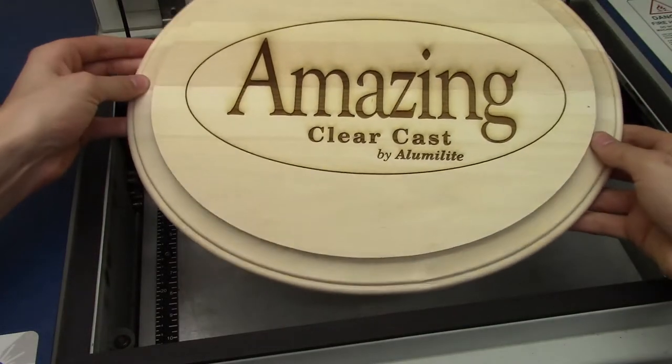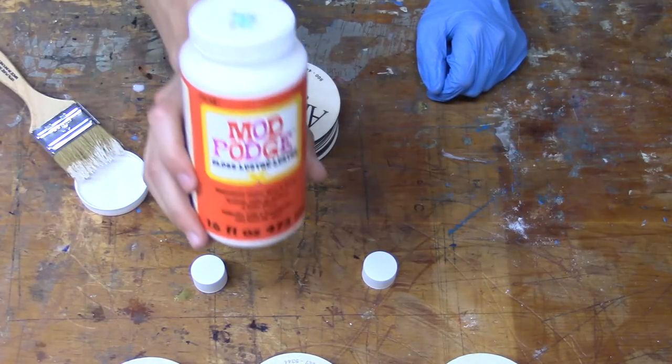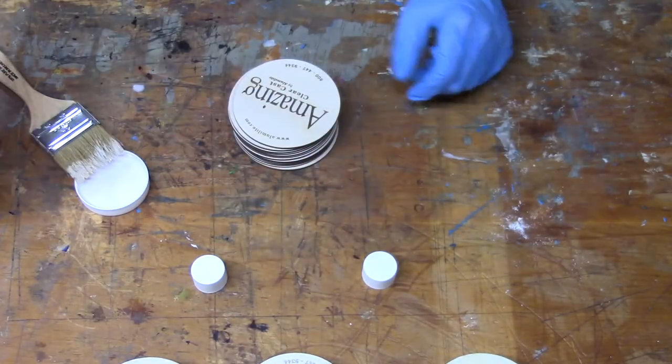Prior to coating with amazing ClearCast, we need to seal the surface of the wood, which is porous, to eliminate air bubbles that might rise up from the surface.